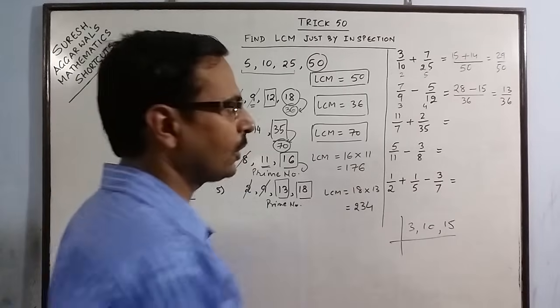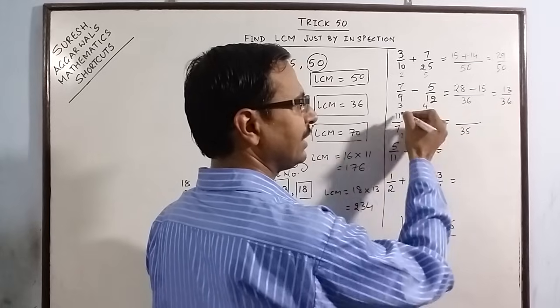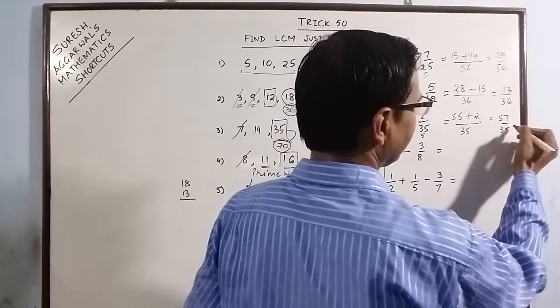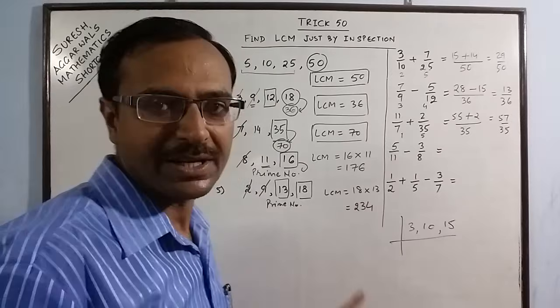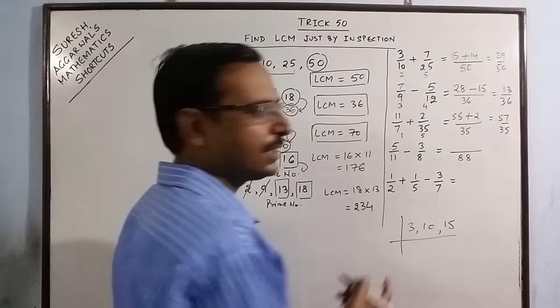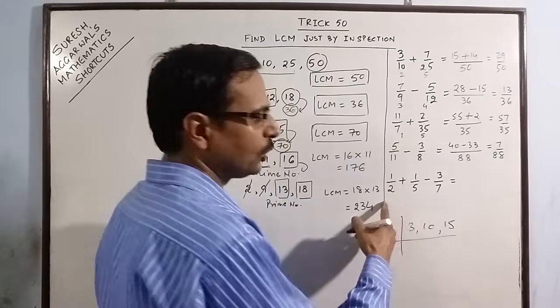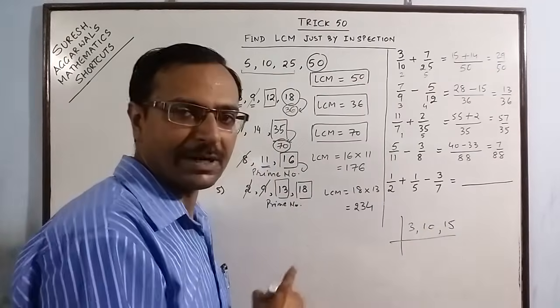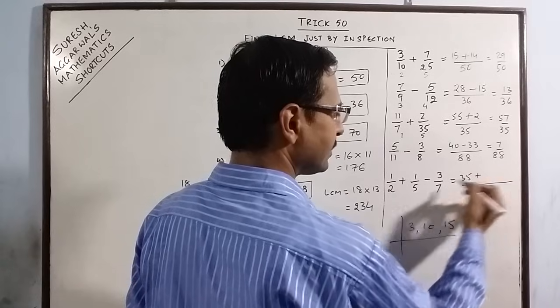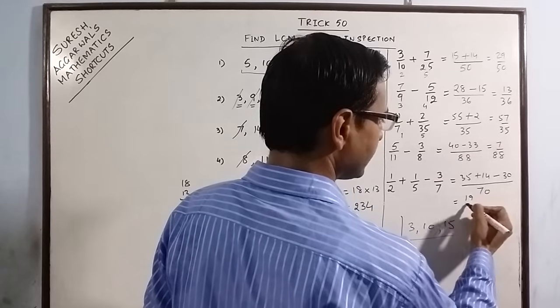Likewise you can go on and on. 7 divides 35 so LCM is 35. 7 ones are 7, 7 fives are 35. 11 fives are 55, 25 plus 2 ones are 25. 57 upon 35 is the answer. 11 and 8 do not divide each other. 11 is a prime number so directly you can multiply: 88, and cross multiply 40 minus 33, 7 upon 88. 2, 5 and 7 they are all prime numbers so you can directly multiply: 75 to 35 to 70. 35 plus 14 minus 30. So this is 19 upon 70.